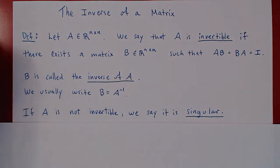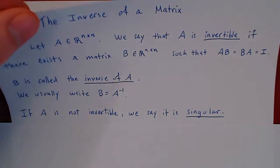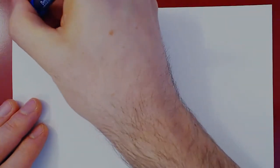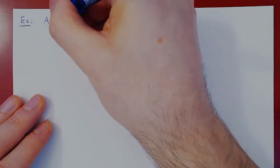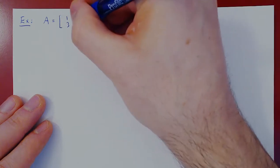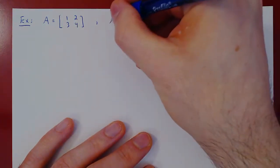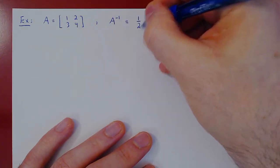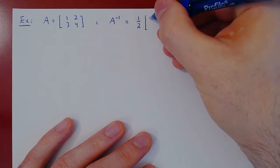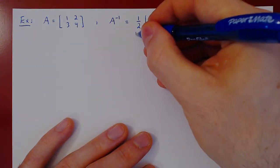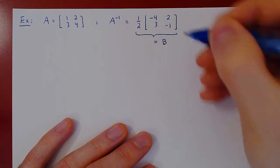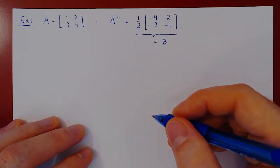Let's consider an example of what an inverse may be in the case of 2 by 2 matrices. Suppose we take the matrix 1, 2, 3, 4. Then I claim the inverse of this matrix — A inverse — equals 1 half times the matrix: negative 4, 2, 3, negative 1. This is our matrix B, the matrix that we claim is the inverse of A. Let's check that A times B equals I, and that B times A also equals I.